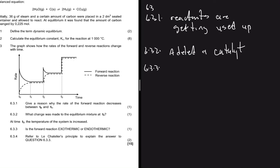Question 6.3.3 asks: is the forward reaction exothermic or endothermic? At t₂, the forward reaction rate shoots up dramatically, then starts going down as reactants are used up. The forward reaction is favored by an increase in temperature, and we know that an increase in temperature only favors the endothermic reaction. So the forward reaction is endothermic.